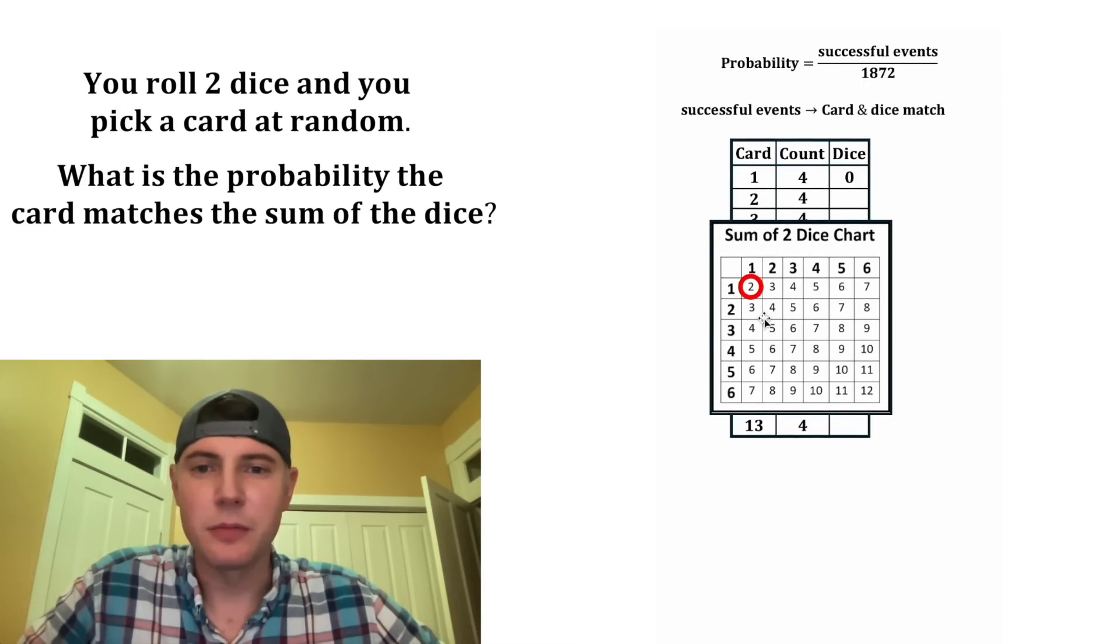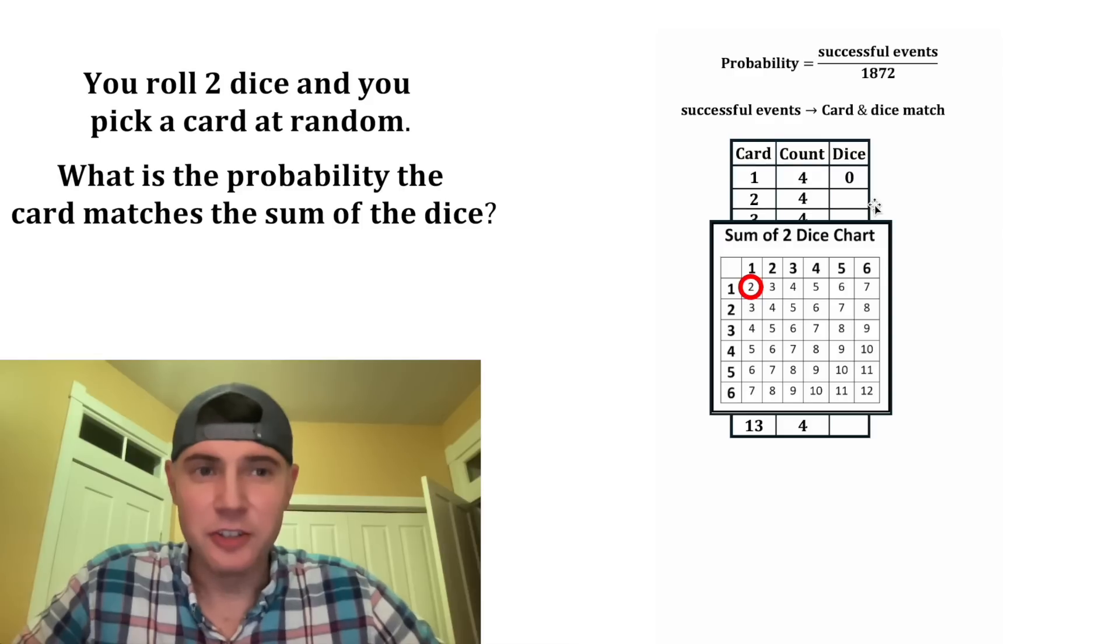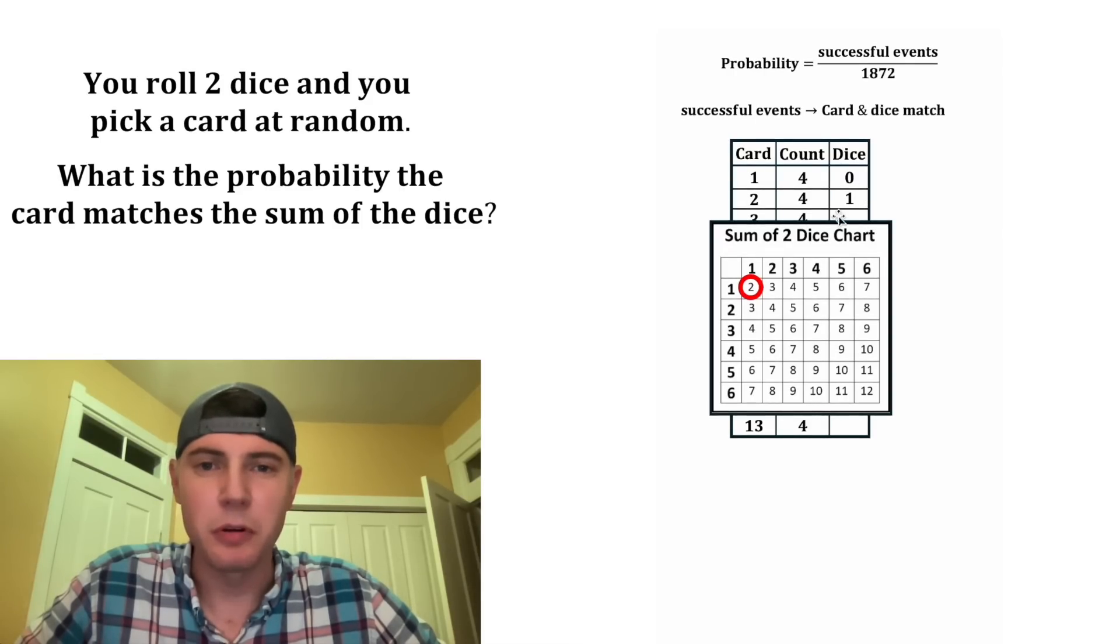And then we want to know how many possible rolls match a card of 2. There's only one possibility for that. That's when both dice are equal to 1, also known as snake eyes. So we can put a 1 right here.